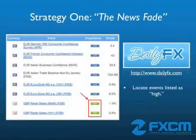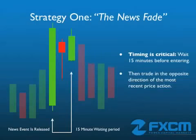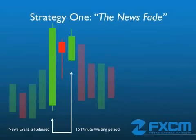First, I need to locate a market moving news event. This can be done by visiting the global economic calendar on dailyfx.com and looking for any events rated as high. Then I'm going to watch for a substantial market move following the news event. The critical step in this strategy is timing — we want to wait 15 minutes before we do anything. After 15 minutes have passed, we're going to trade in the opposite direction of the recent price action, in anticipation that the price should revert back to previous levels.